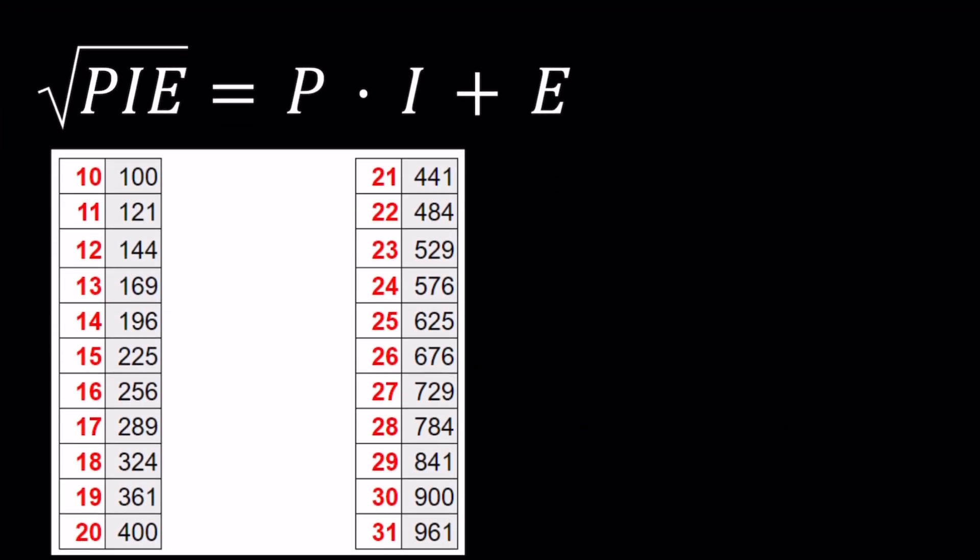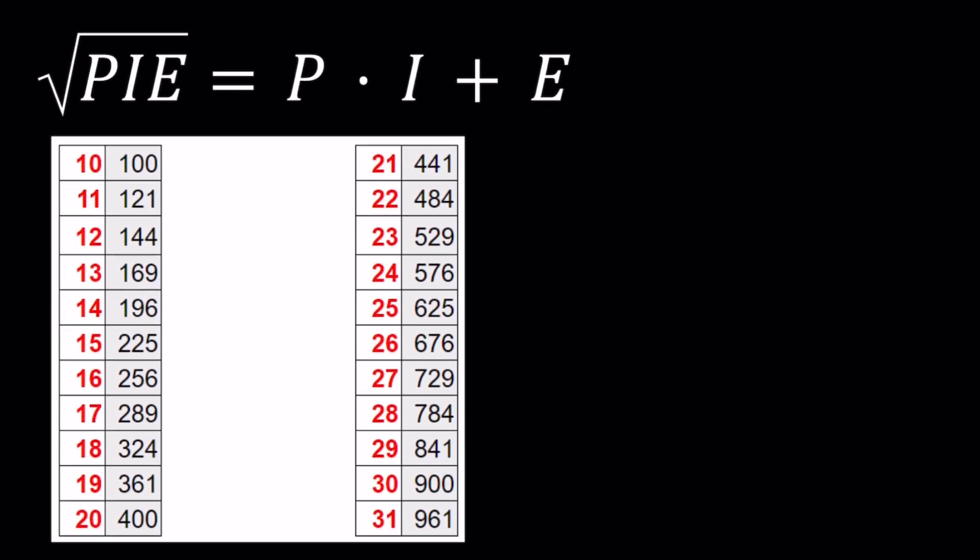So here's a table of perfect squares of numbers 10 through 31. Why do we stop at 31? Because 32 squared is 1024, which is also 2 to the 10th power. And 9 squared is a two-digit number, so we're only going to be looking at these numbers.